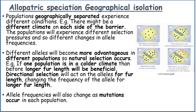Populations that are geographically separated experience different conditions — there might be a different climate on each side of the barrier. The populations will experience different selection pressures and so different changes in allele frequencies. Different alleles will become more advantageous in different populations, so natural selection occurs. For instance, if one population is in a colder climate, then longer fur length will be beneficial, and directional selection will act on the alleles for fur length, changing the frequency of the allele for longer fur.